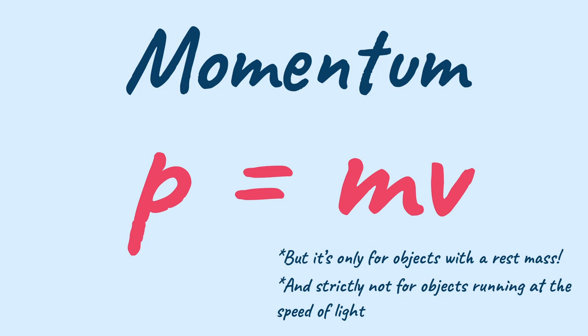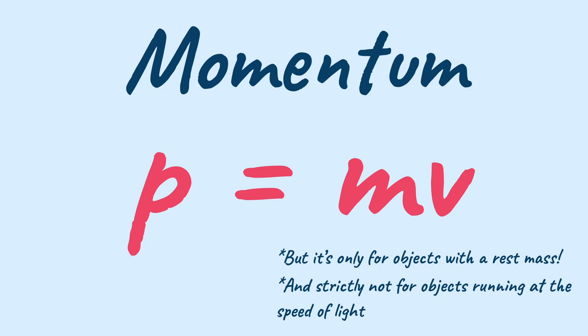So for photons the correct momentum is given by the special relativity which states E squared equals P squared C squared plus M squared into C to the power 4. But in the case of light our M squared into C to the power 4 becomes zero because the mass of a photon is zero.